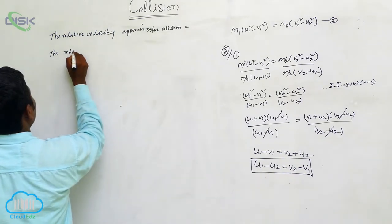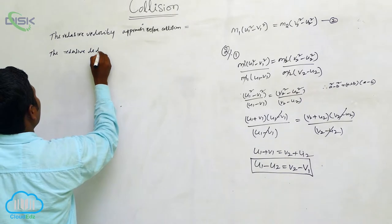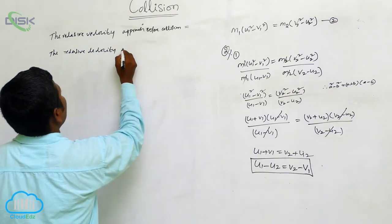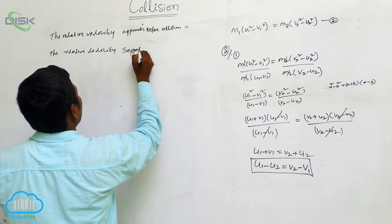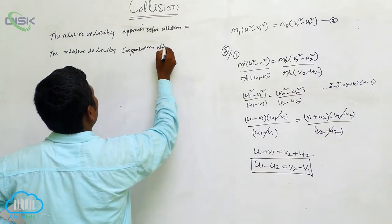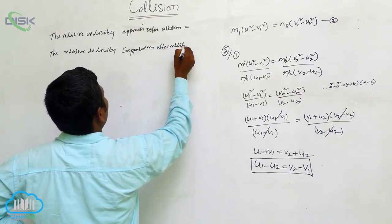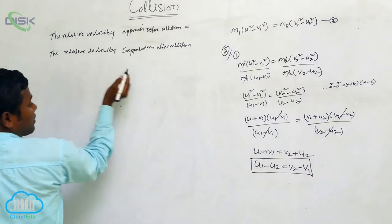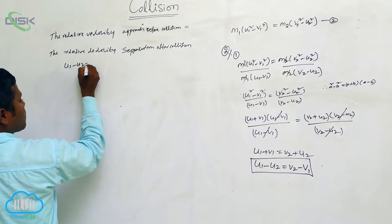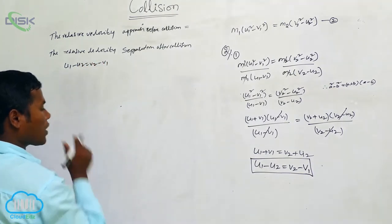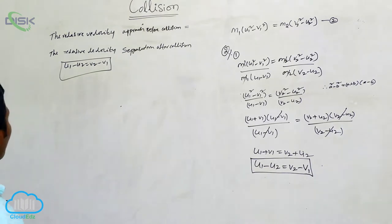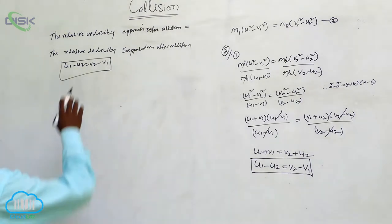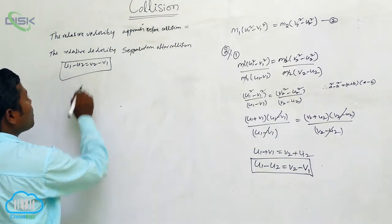So what is that meaning? U1 minus U2 is equal to V2 minus V1. This is the meaning in words: the relative velocity of approach before collision equals the relative velocity of separation after collision. This is the meaning of U1 minus U2 is equal to V2 minus V1.